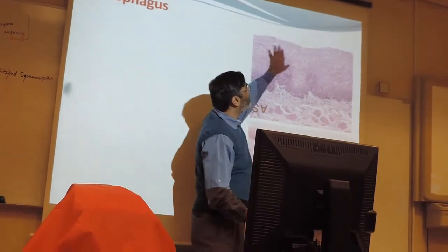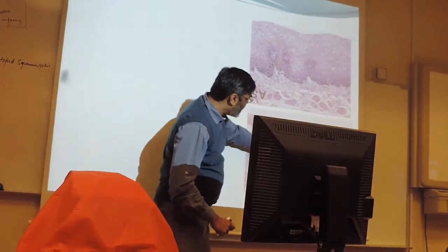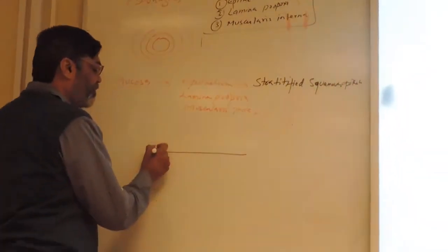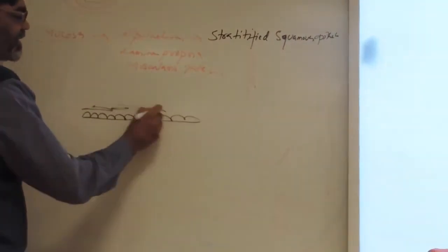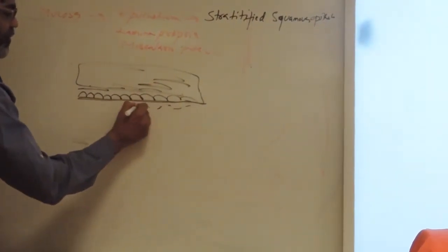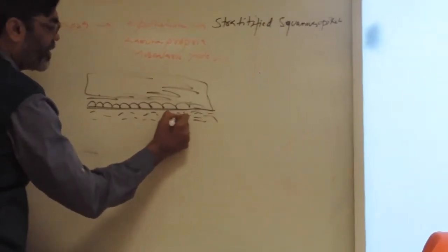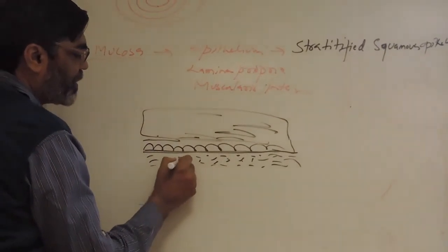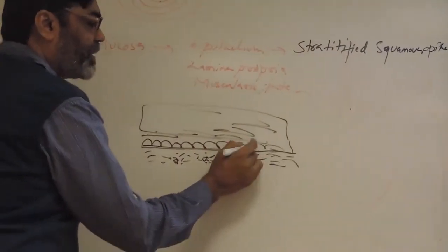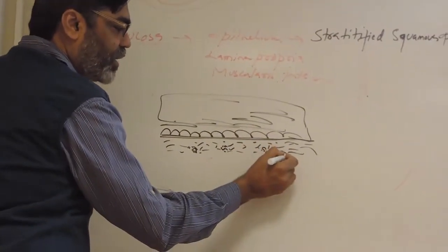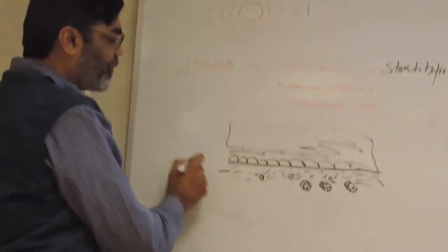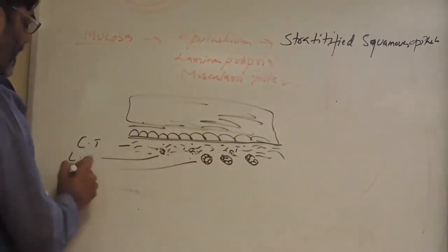This thick epithelium has superficial squamous cells. In the lamina propria we have loose connective tissue. Below the basement membrane we have basal cells and epithelial cells. In the loose connective tissue of the lamina propria, we have aggregates of lymphocytes and some glands — seromucous glands, both serous and mucous types. So lamina propria contains connective tissue, lymphocytes, and glands.